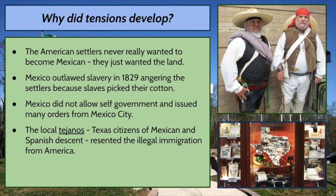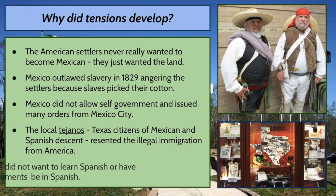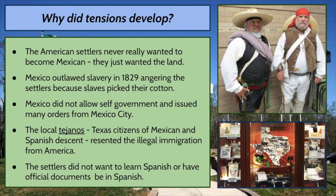There was also a group of people called Tejanos — Mexicans who lived in Texas, of Spanish and Mexican descent but very culturally Texan — who resented the illegal immigration of many Americans into Mexico. Many Americans were moving there without the specific permission of the Mexican government, and there was a kind of mad rush by Americans to move into that territory illegally. The Tejanos did not like that very much. The settlers also really did not want to learn Spanish, even though all official documents were required to be in Spanish. We have quite a bit of tension building up.